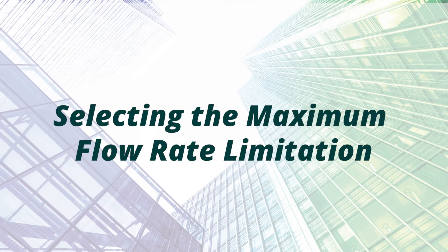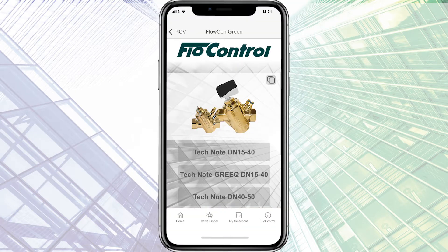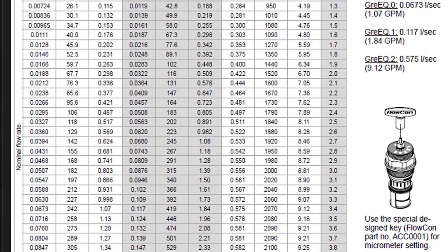The flow rate and setting options are found in tables in the GREEQ, Green 0.0 to 2, and Green 0.3 tech notes on our website or on the FlowControl on-site app. The Green 0.0 to 2 tech notes include the flow rates for the Green 0.1 high flow.